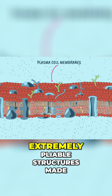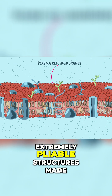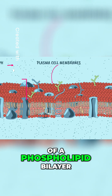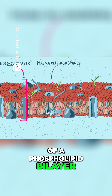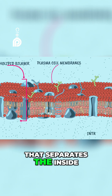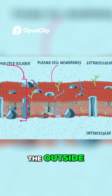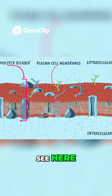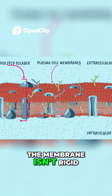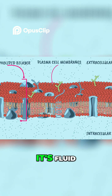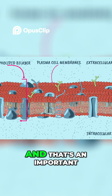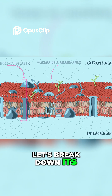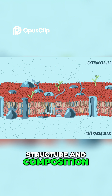Plasma cell membranes are extremely pliable structures, made of a phospholipid bilayer, that separates the inside of the cell from the outside. As you can see here, the membrane isn't rigid — it's fluid, and that's an important point to remember. Now let's break down its structure and composition.